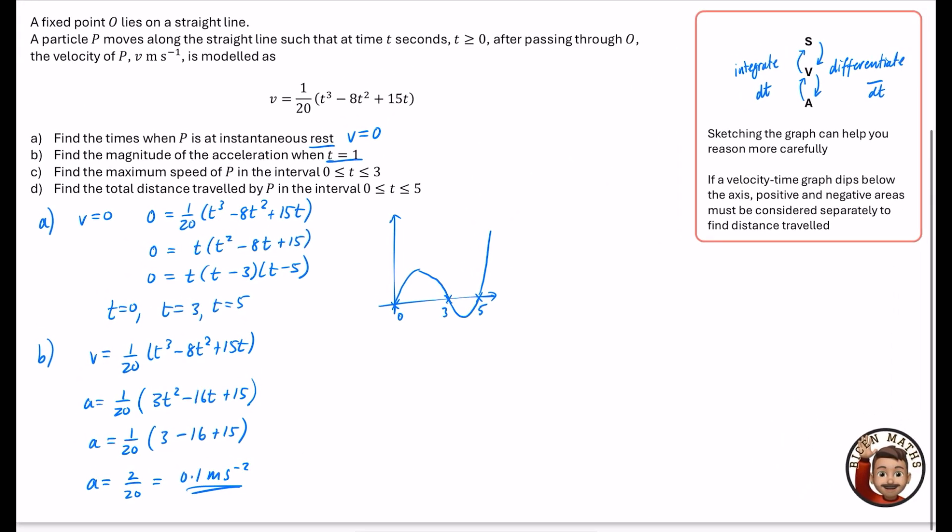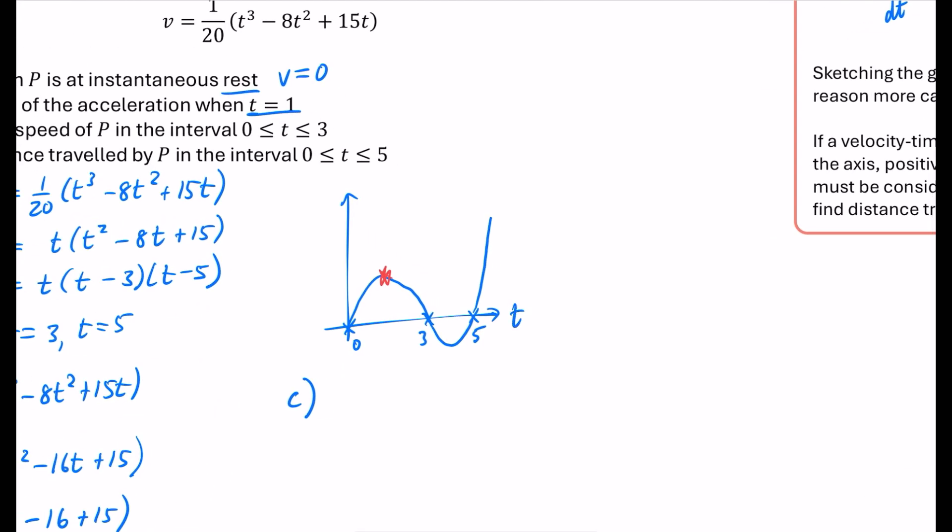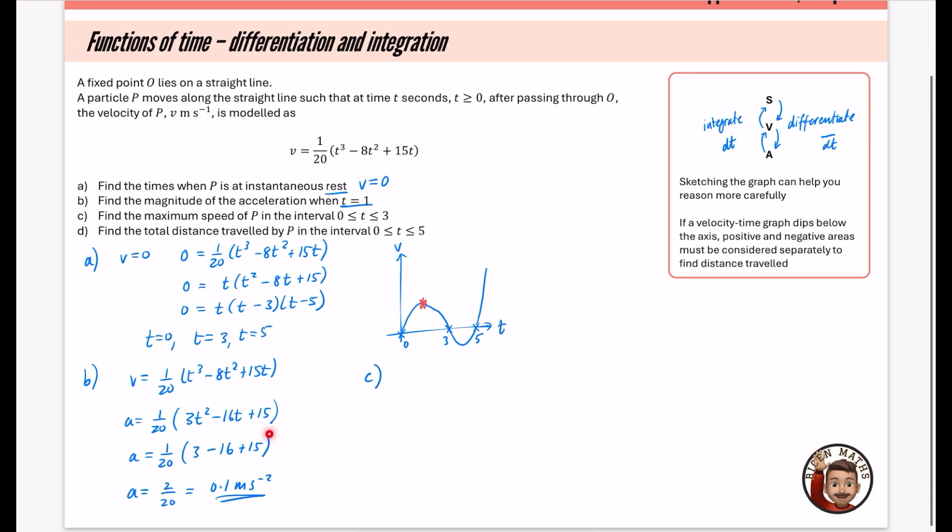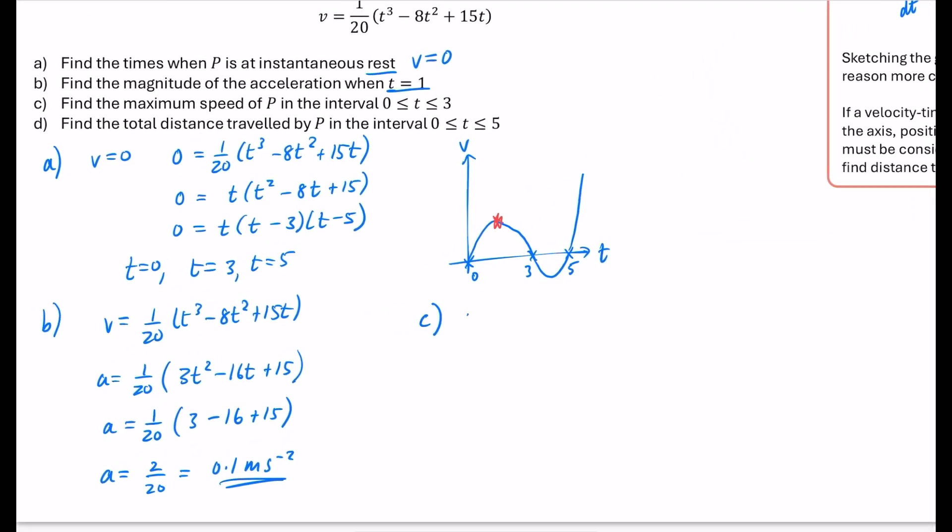It wants us to find the maximum speed of P in the interval between 0 and 3. This is where the graph is really useful. We're trying to find the maximum speed. This graph is time and velocity. We're wanting to find the turning point on the velocity graph. Turning points can be found by doing differentiation, which we've already done. Or we could say the maximum speed is when the acceleration is 0.